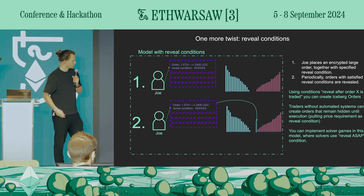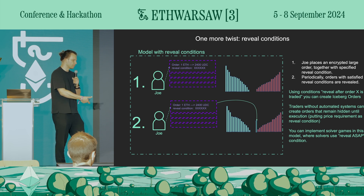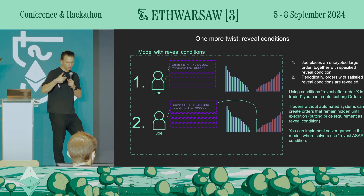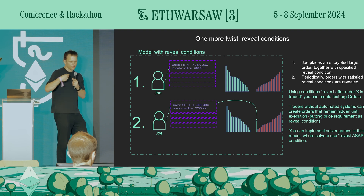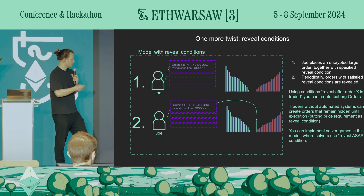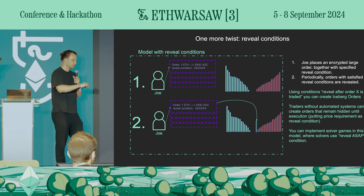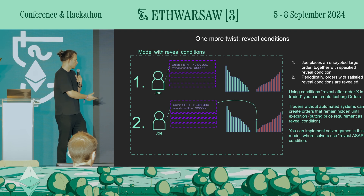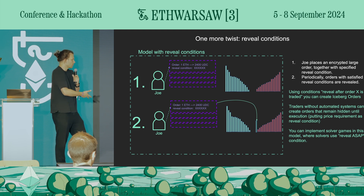This relates to the second point: traders without automated systems or bots can automate something by sending a transaction on-chain just once. Using this system, you can also implement solver games — solvers can put encrypted intents which will be decrypted at once and evaluated at a specific point. You can write arbitrary rules for this solver game, and it basically fills this framework. We see it as a programmatic framework for private trading.